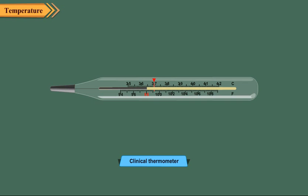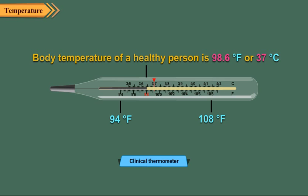The temperature of a human body is measured with a clinical thermometer. Generally, markings from 94 degrees Fahrenheit to 108 degrees Fahrenheit are done in clinical thermometers. The body temperature of a healthy person is 98.6 degrees Fahrenheit or 37 degrees Celsius.